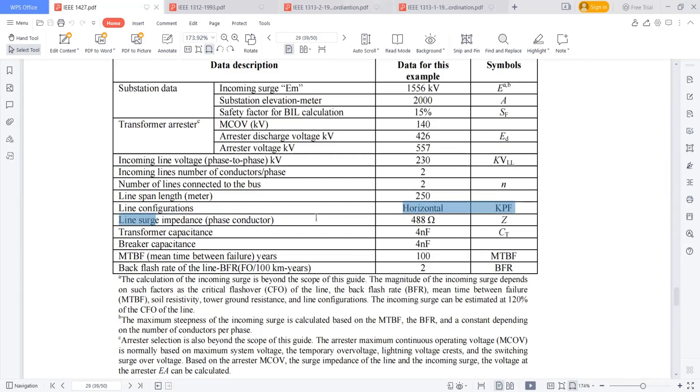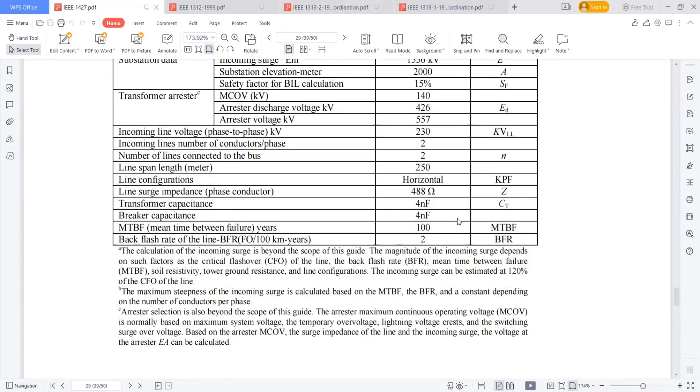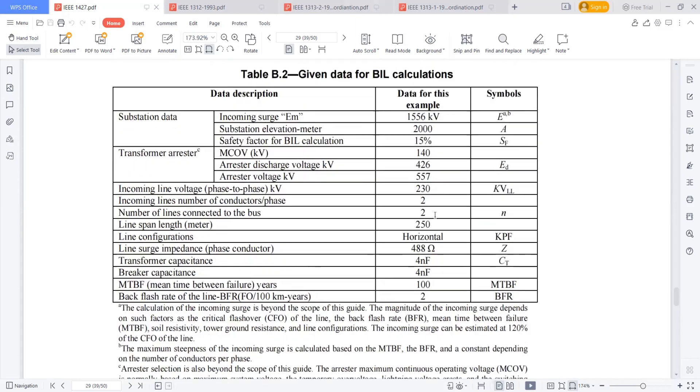What is the line surge impedance? It's again depends on from the transmission line analysis. They will get 488 ohms. And this transformer capacitance, breaker capacitance, mean time between the failures, back flash over rate. All these things you will get from the manufacturer and from the IEEE part two. So these are some inputs I required to do this calculation.